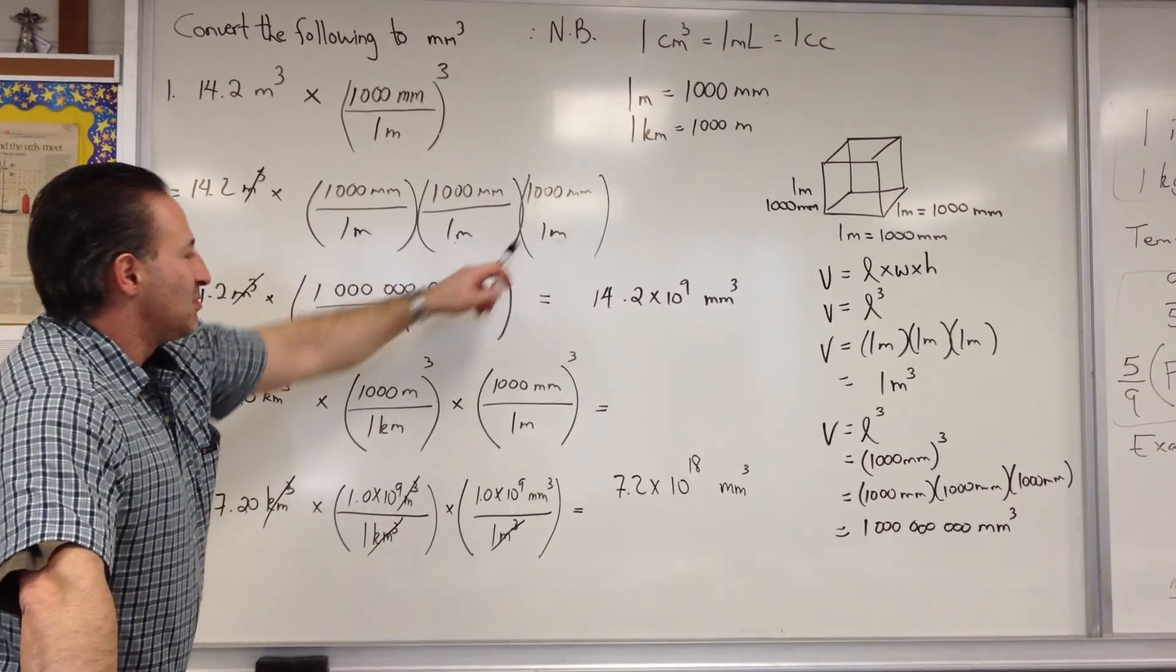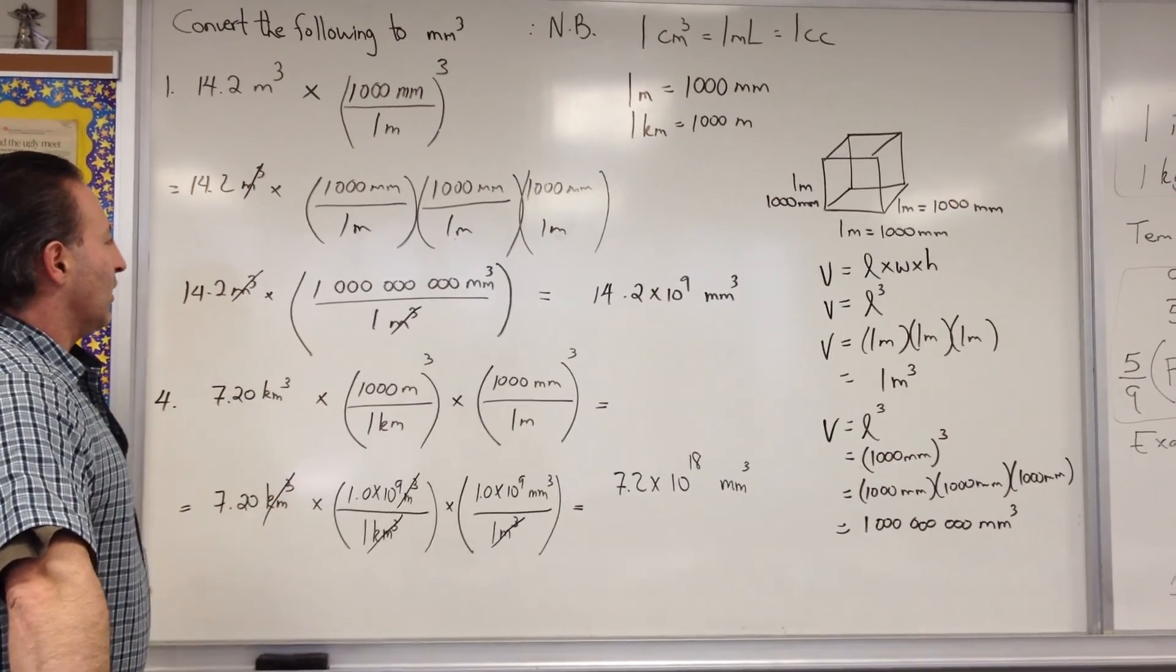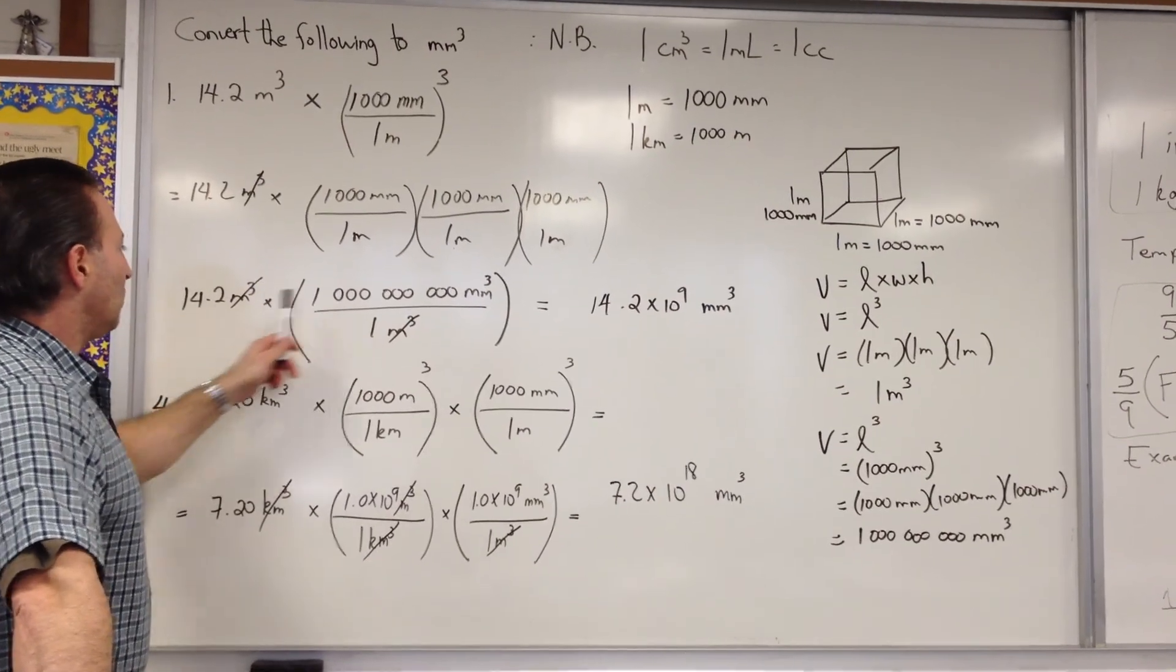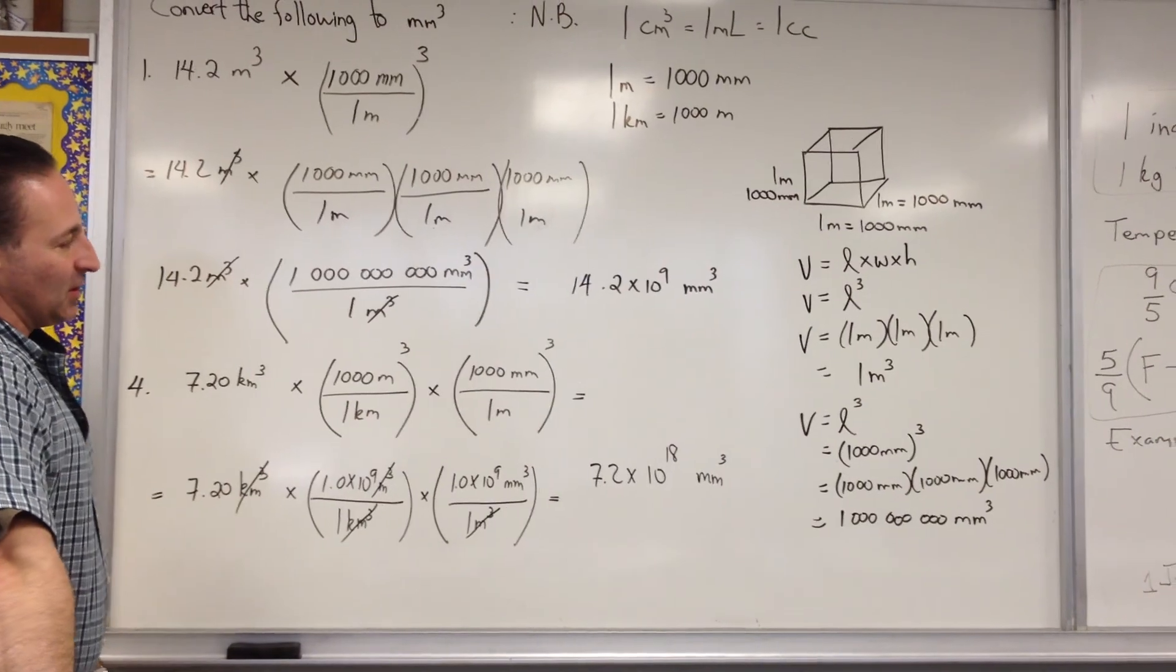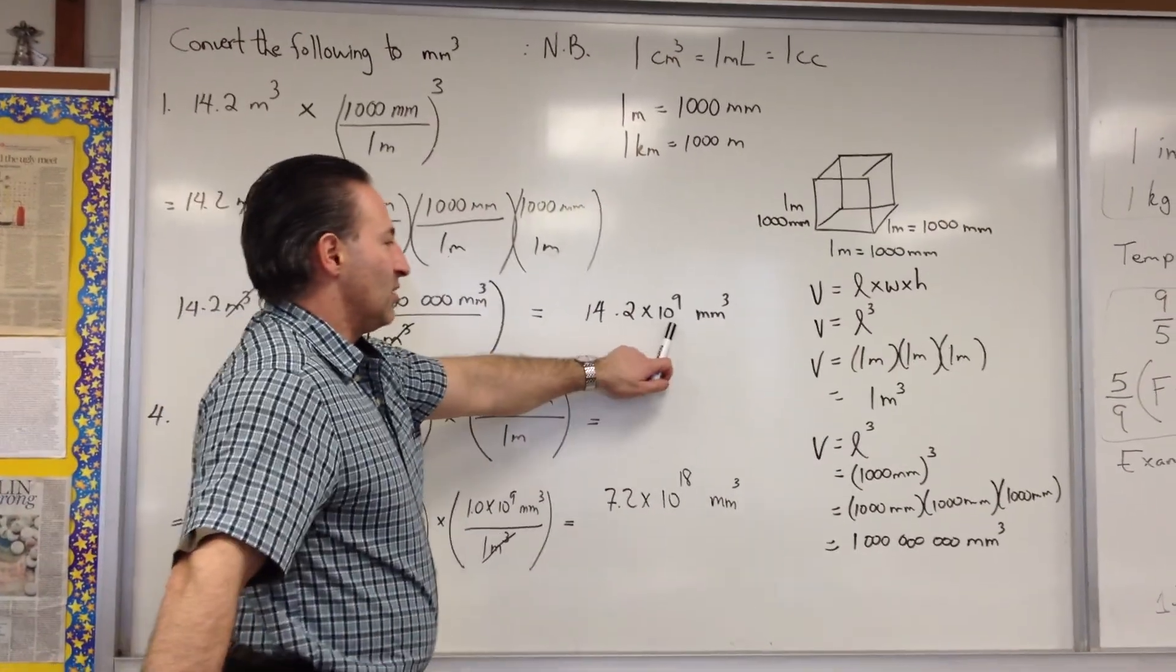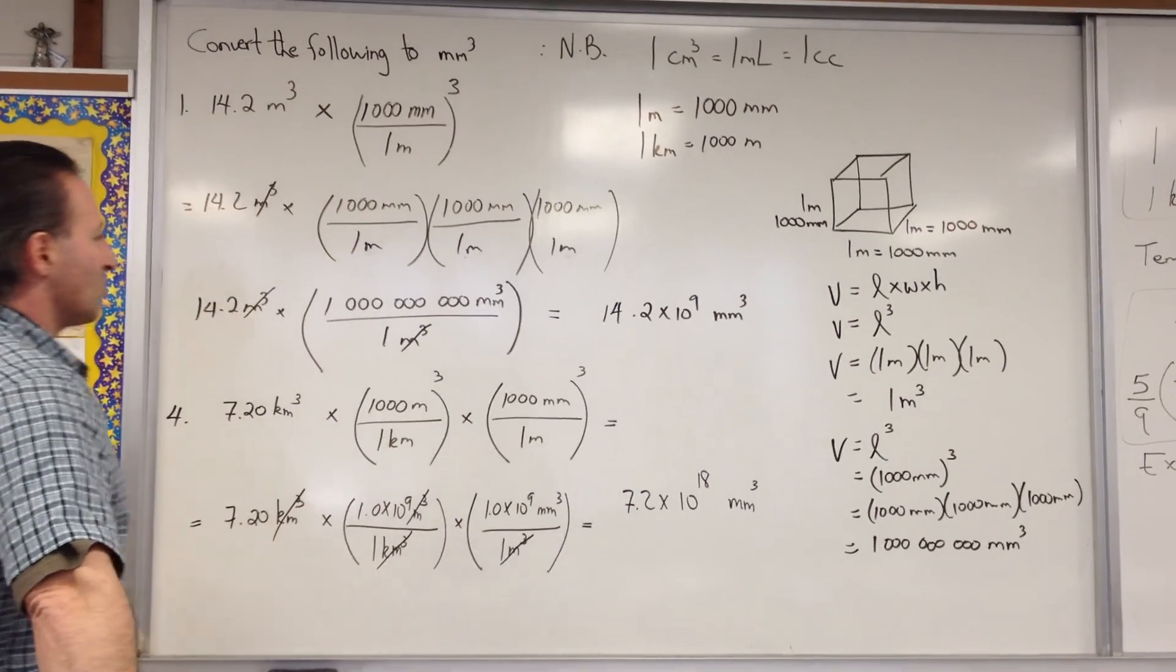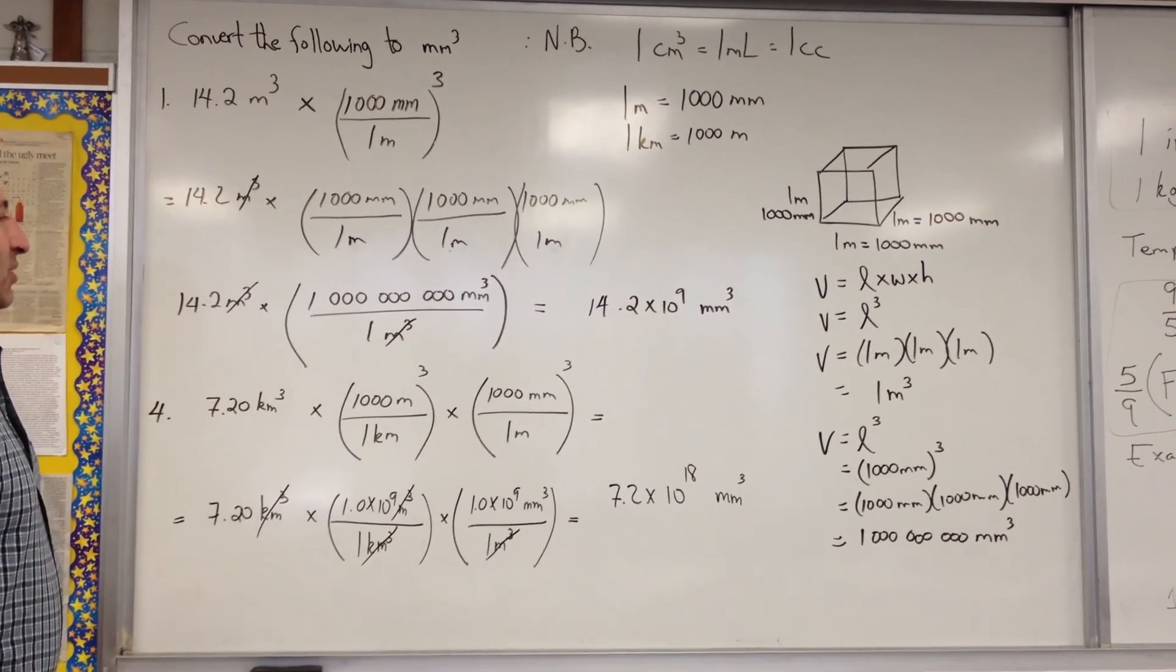So, meters times meters times meters is meters cubed, which allows us to cancel with the meters cubed over here. So, the answer is going to be in millimeters cubed. 14.2 times 1 billion gives you 14.2 billion. And instead of writing out the 9 zeros, I just said 10 to the power of 9 millimeters cubed. So, there are 14 billion millimeters cubed in 14.2 meters cubed.